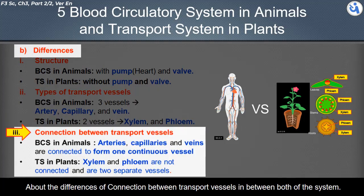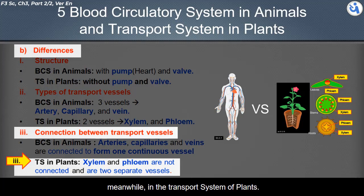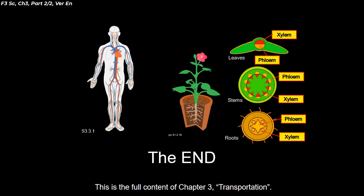Regarding the connection between transport vessels: in animals, arteries, capillaries, and veins are connected to form one continuous vessel. In plants, xylem and phloem are not connected — they are two separate vessels. This concludes the full content of Chapter 3: Transportation.